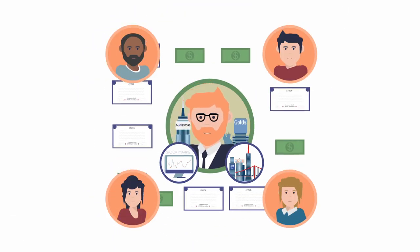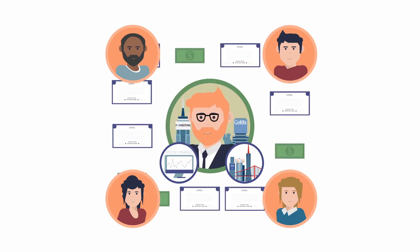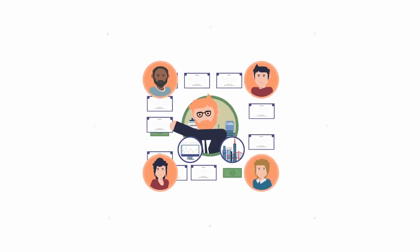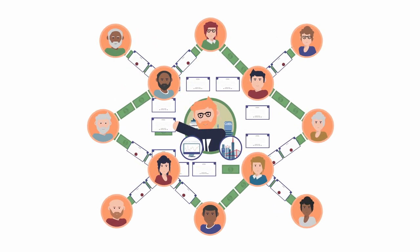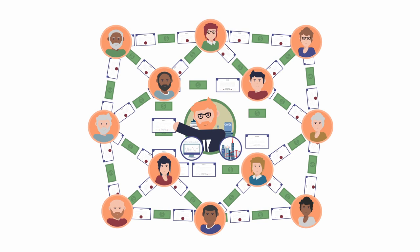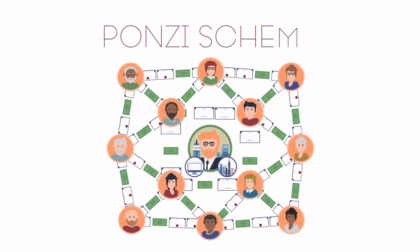In reality, the stock market is a massive system that shuffles money between investors. It is a system where current investors' profits are directly dependent on the inflow of money from new investors, and such a system is also known as a Ponzi scheme.